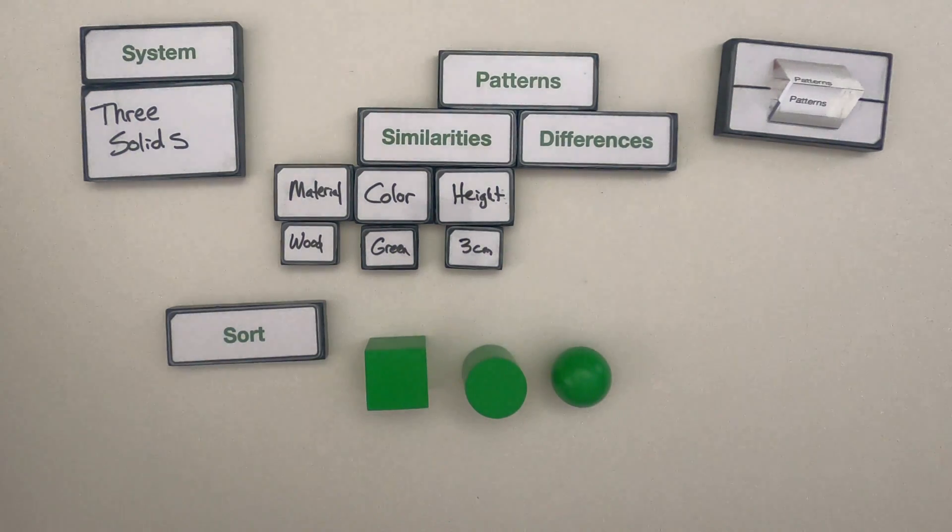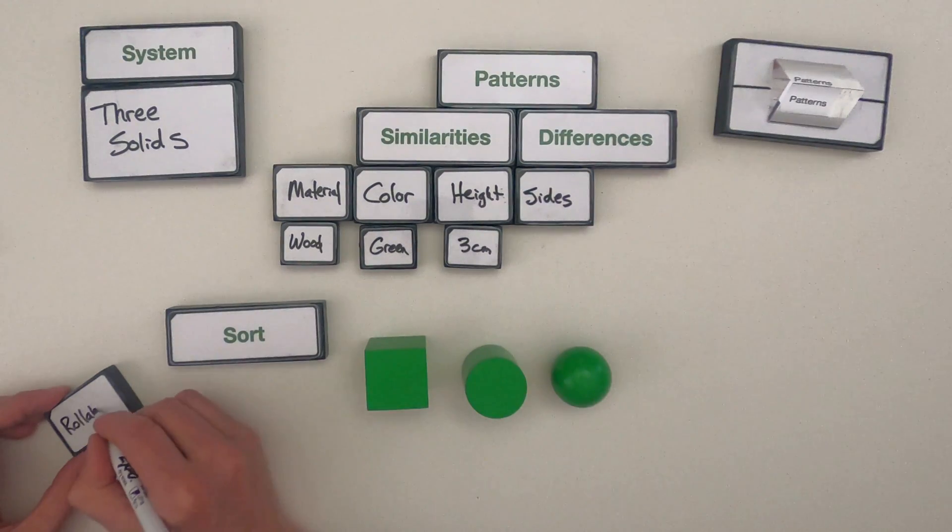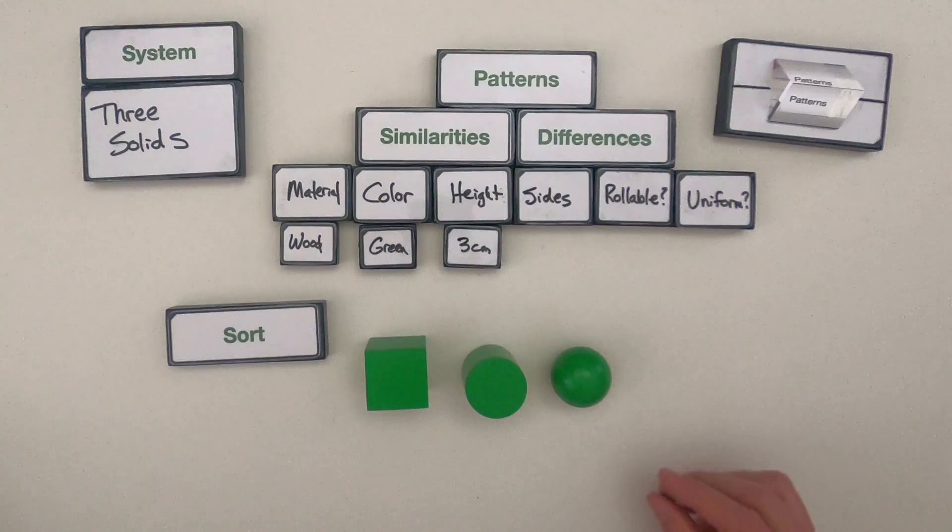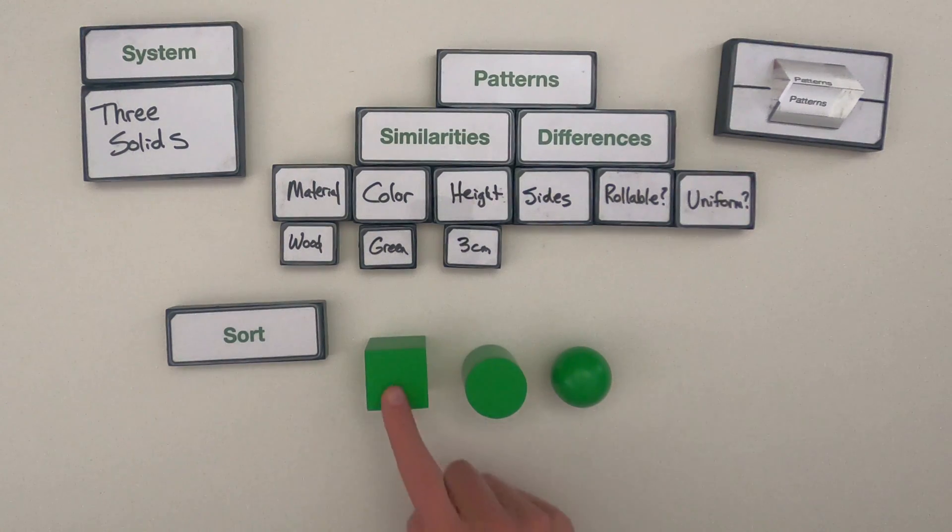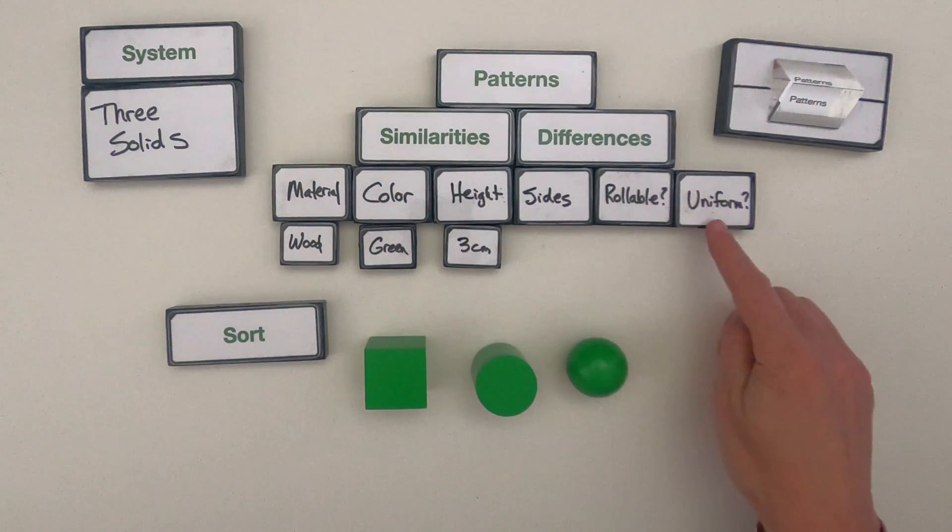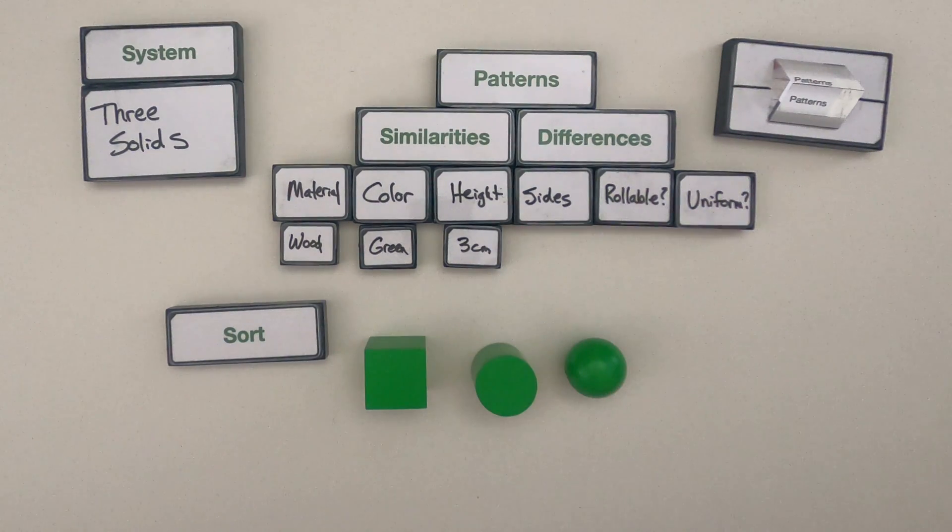So let me write the differences here. So three things that I've noticed are the number of sides that they have, like a sphere doesn't have any sides, are they rollable, and then are they uniform? So let me write these down below.